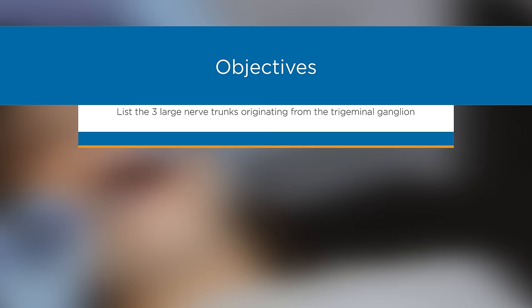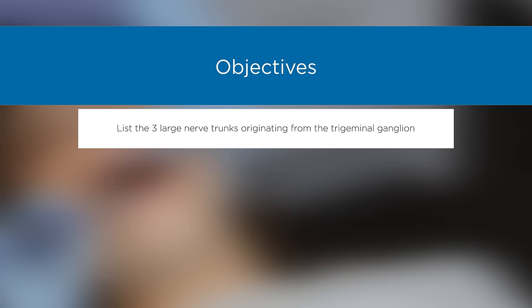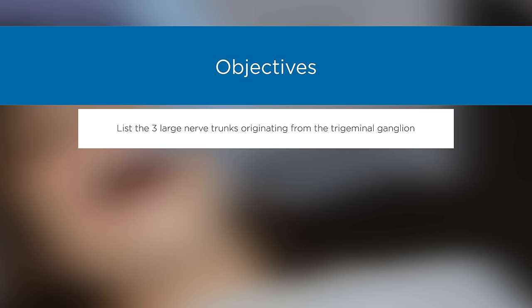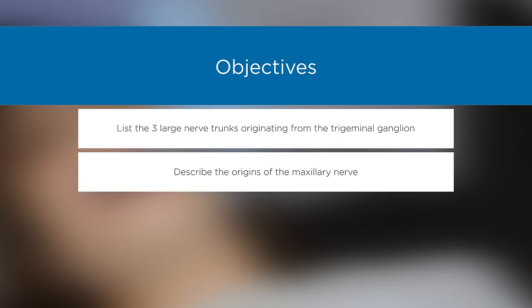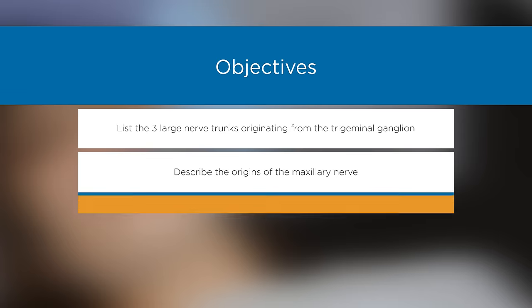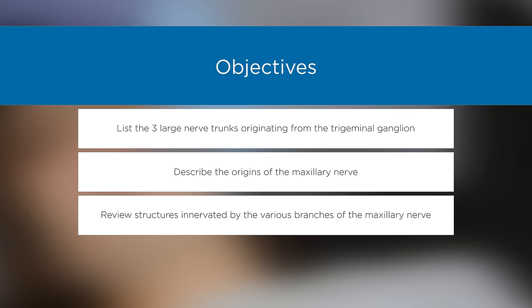Objectives: List the three large nerve trunks originating from the trigeminal ganglion. Describe the origins of the maxillary nerve. Review structures innervated by the various branches of the maxillary nerve.